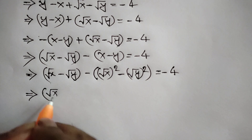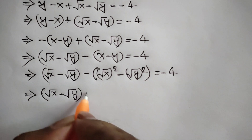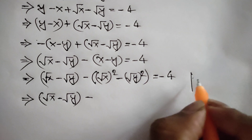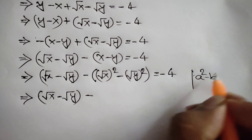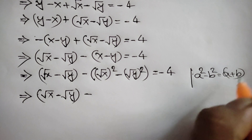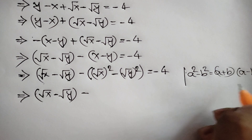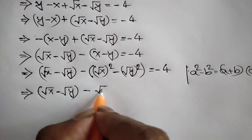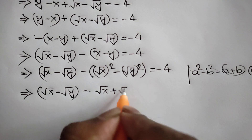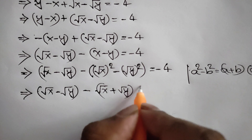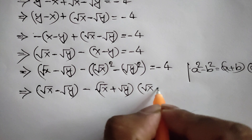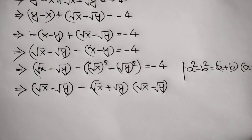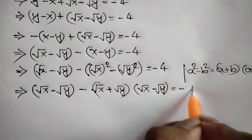Square root of x minus square root of y — here we can apply the algebra rule: we know a squared minus b squared is equal to a plus b times a minus b. So applying this rule, we can write square root of x plus square root of y times square root of x minus square root of y is equal to negative 4.